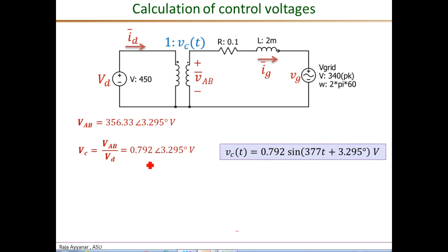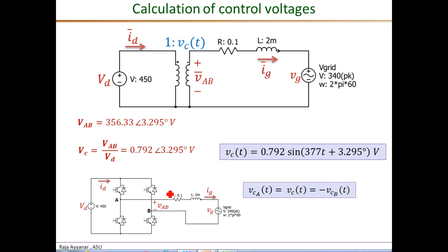Finally, convert this VC phasor to the corresponding time domain to get VC of t. That will be a sinusoidal signal with a peak value of 0.792 and a frequency of 377 radians per second. From this angle, the expression is sine 377t plus 3.295 degrees. In the switching model corresponding to unipolar PWM, we know that the control voltage for leg A is simply the same as the VC we calculated, so VCA is VC, and the control voltage for leg B is minus VC. Therefore, VCB is minus 0.792 sine omega t plus 3.295 degrees volts.